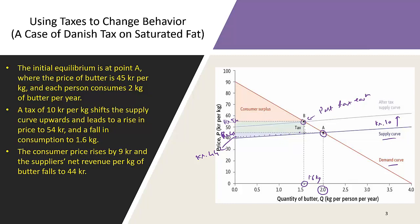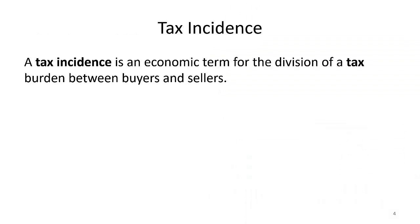Sellers do not get to keep 54 kroner — they have to pay 10 kroner to the government, so the actual price kept by sellers is 54 minus 10 = 44 kroner. Consumer prices rose by only 9 kroner, not 10, because 1 kroner comes from the seller's pocket. This is the concept of the incidence of taxation. The total tax collected is 1.6 kg times 10 kroner.